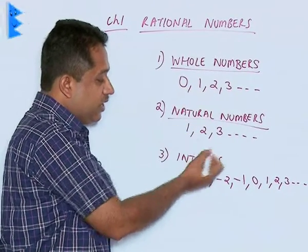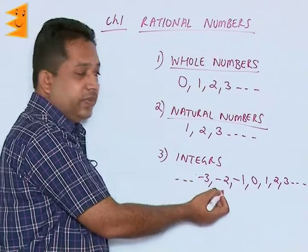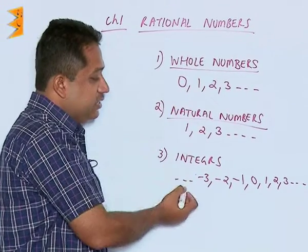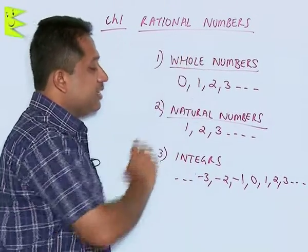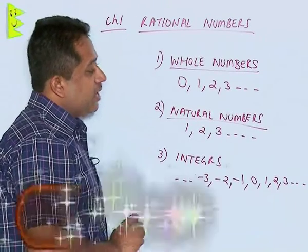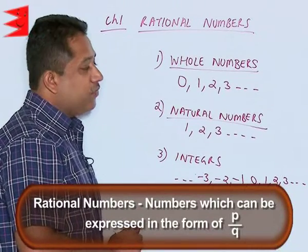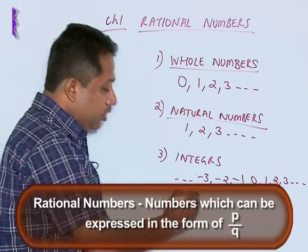We should know what are whole numbers, what are natural numbers, and what are integers. Now once we know these, we come to our topic, that is rational numbers. Rational numbers are numbers which can be expressed in the form of p upon q.